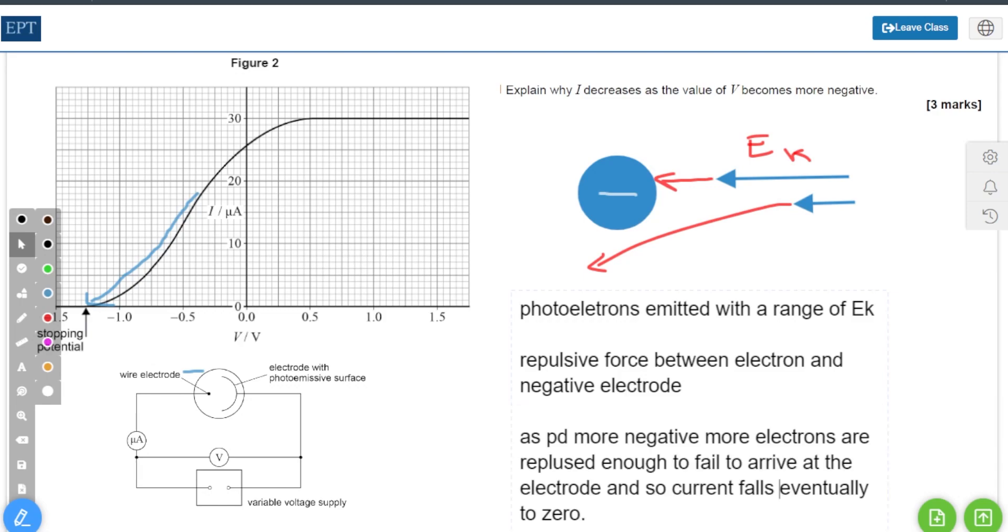The third point then is to say that as the potential difference becomes more negative, so more electrons are repulsed enough such that they fail to arrive at the electrode and so the current falls eventually to zero.